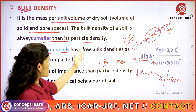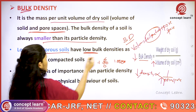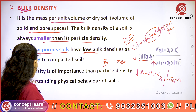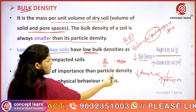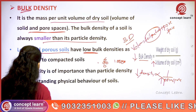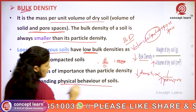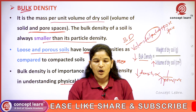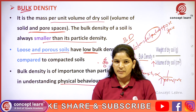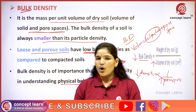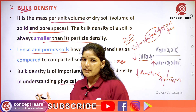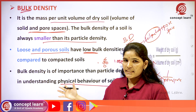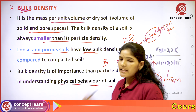Loose and porous soils have lower density compared to compacted soils. Bulk density is more important than particle density in understanding the physical behavior of the soil — such as how water is held, the infiltration rate, and permeability.